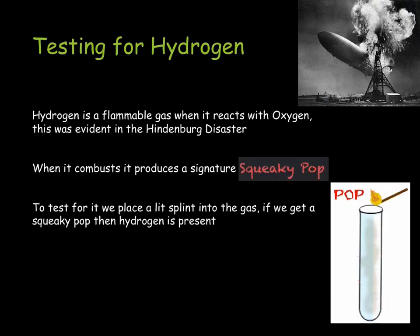The first gas that you need to be able to test for is hydrogen. Hydrogen is a highly flammable gas when it reacts with oxygen. This is what happened in the Hindenburg disaster, which we can see here. When it combusts, it produces a signature squeaky pop. To test for it, we place a lit splint into the gas. If we get that squeaky pop, then hydrogen is present.